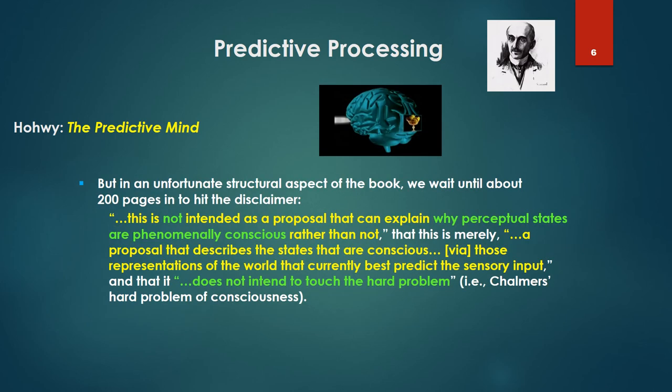In other words, we're hoping that we can explain the magic that has to happen to get that image of the coffee cup out of the brain and into the external world. But in an unfortunate structural aspect of the book, we waited until about 200 pages in to hit this disclaimer from Howie. This is not intended as a proposal that can explain why perceptual states are phenomenally conscious rather than not. And that this is merely a proposal that describes the states that are conscious via those representations of the world that currently best predict the sensory input. And that it does not intend to touch the hard problem, which is to say Chalmers' hard problem of consciousness.